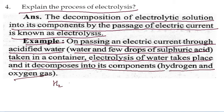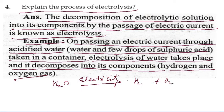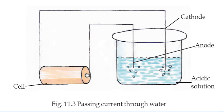H₂O (water) when electricity is passed through it converts into hydrogen and oxygen. The solution used is dilute sulfuric acid as the electrolyte in this electrolysis process.